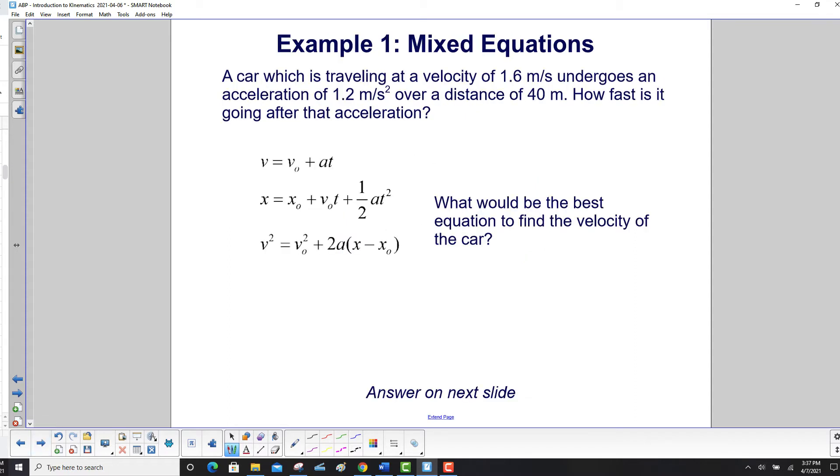Example 1. A car which is traveling at a velocity of 1.6 meters per second undergoes an acceleration of 1.2 meters per second squared over a distance of 40 meters. How fast is it going after that acceleration? What would be the best equation to find the velocity of the car? The answer will be on the next slide.